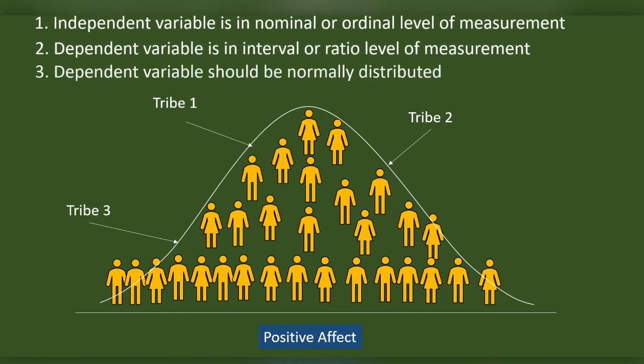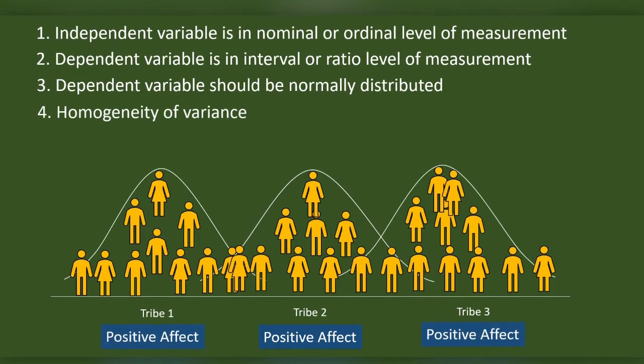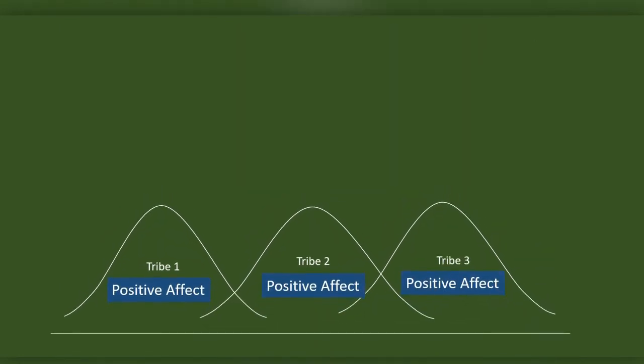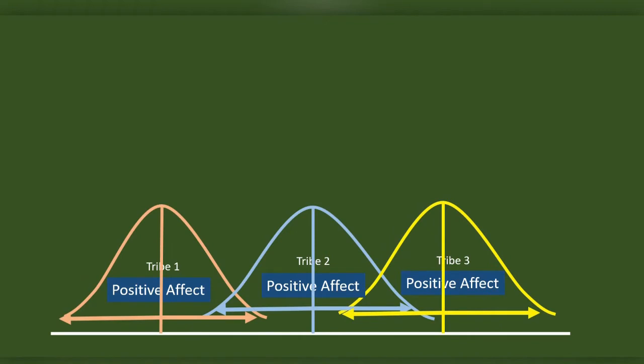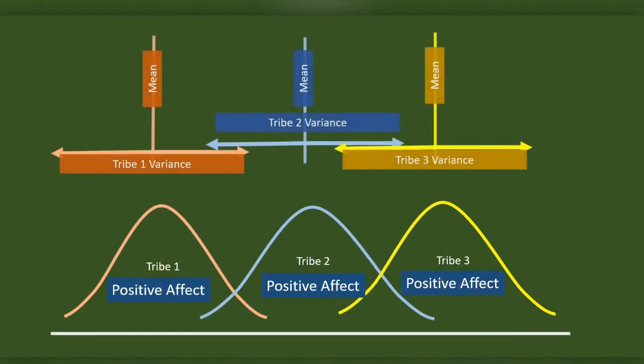Before doing the analysis, we have to make sure that the data is normally distributed, and the three groups are homogenous or equal in their variance while considering the distribution of the positive affect scores. Consider these as the curves of the distribution of the scores of each of the three groups. These are the mean and variance of the distribution in each of the three groups.